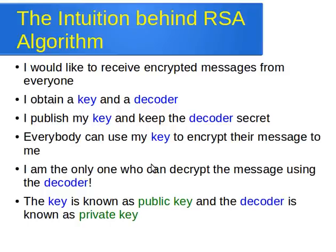If people want to send me something, they can use my key — the one I made public — to encrypt their message and then send it to me. When I receive that message, I can decrypt it using the decoder. So again, I need to have two things: a key and a decoder. I publish my key so people can use it to encrypt something, and I keep the decoder secret to decrypt the message and retrieve the original information.